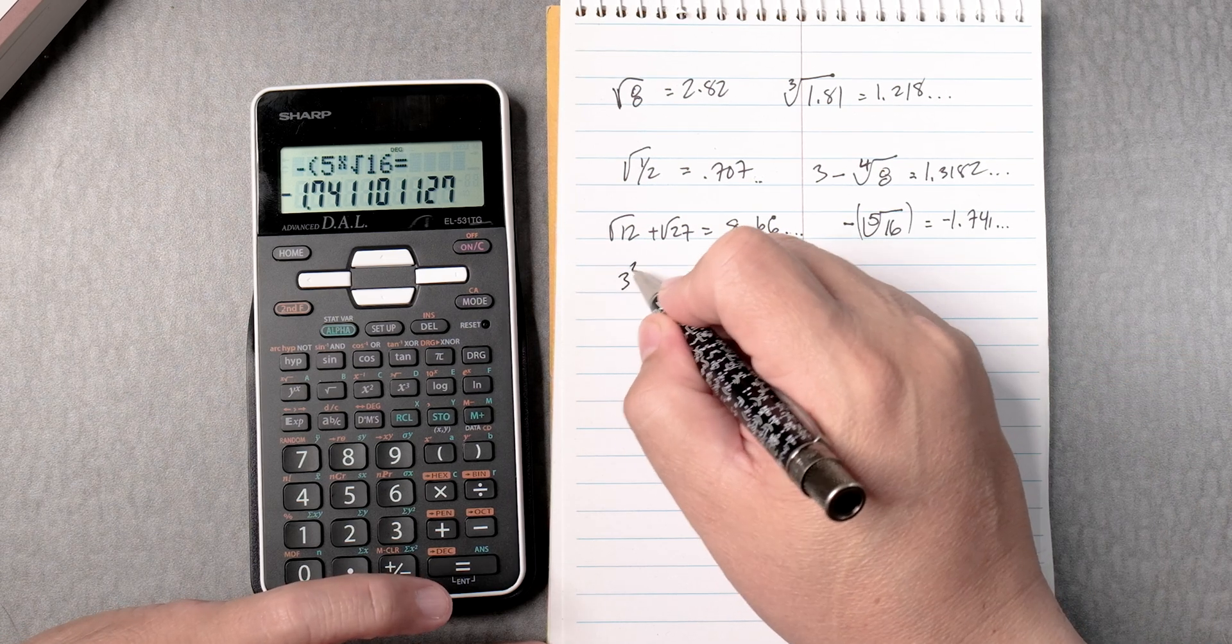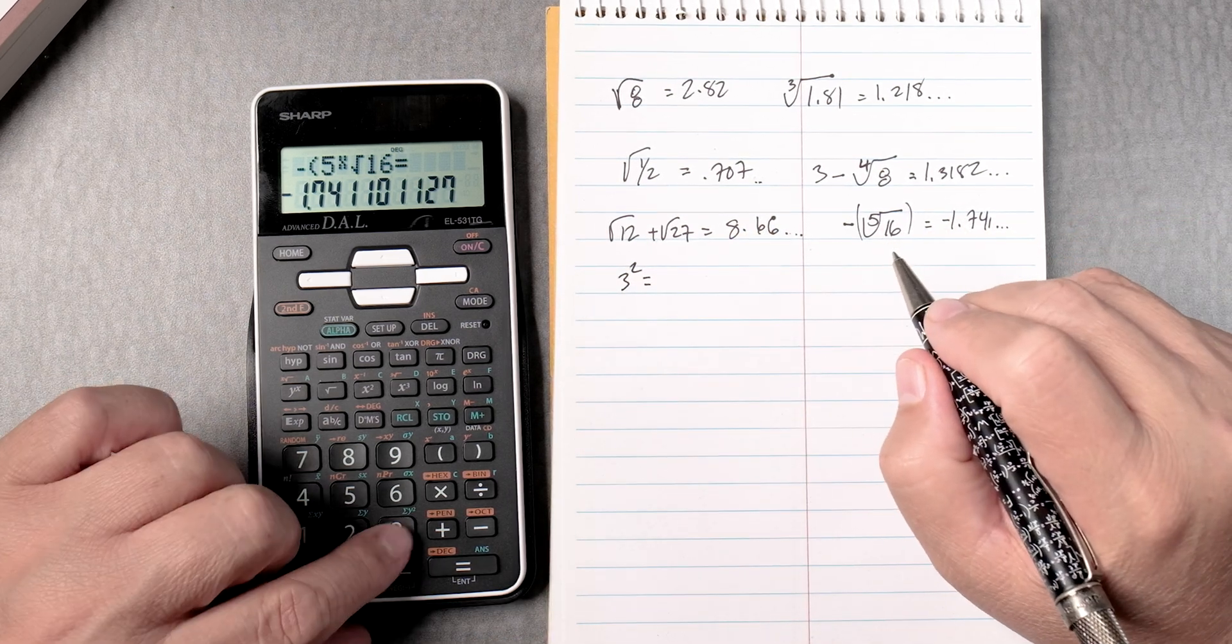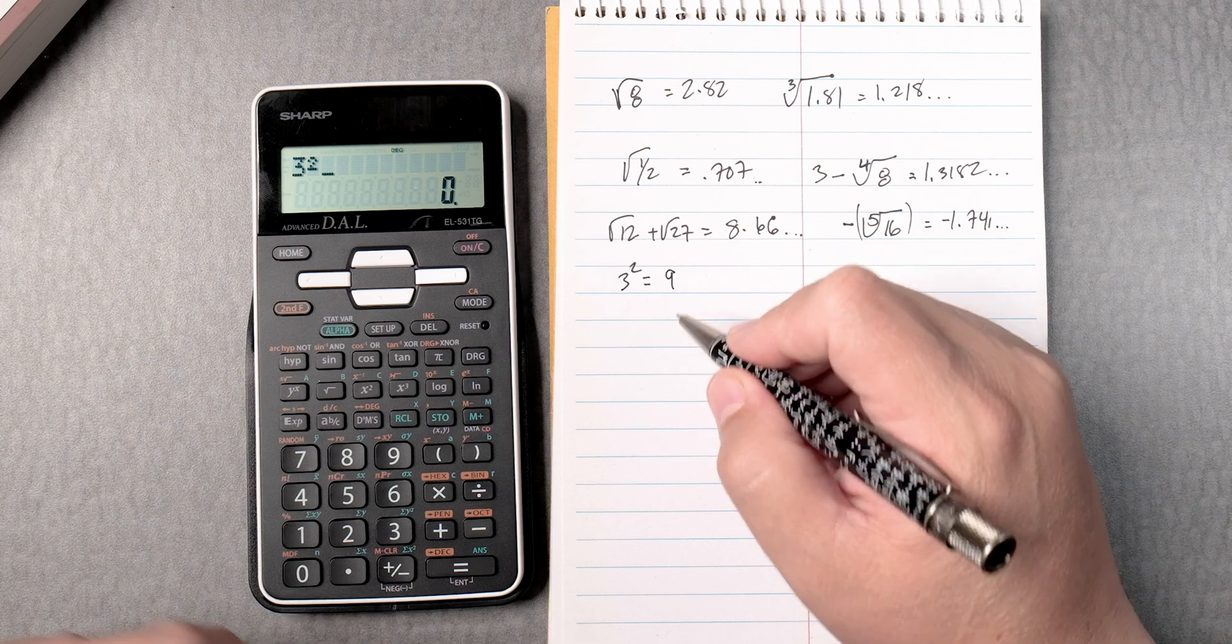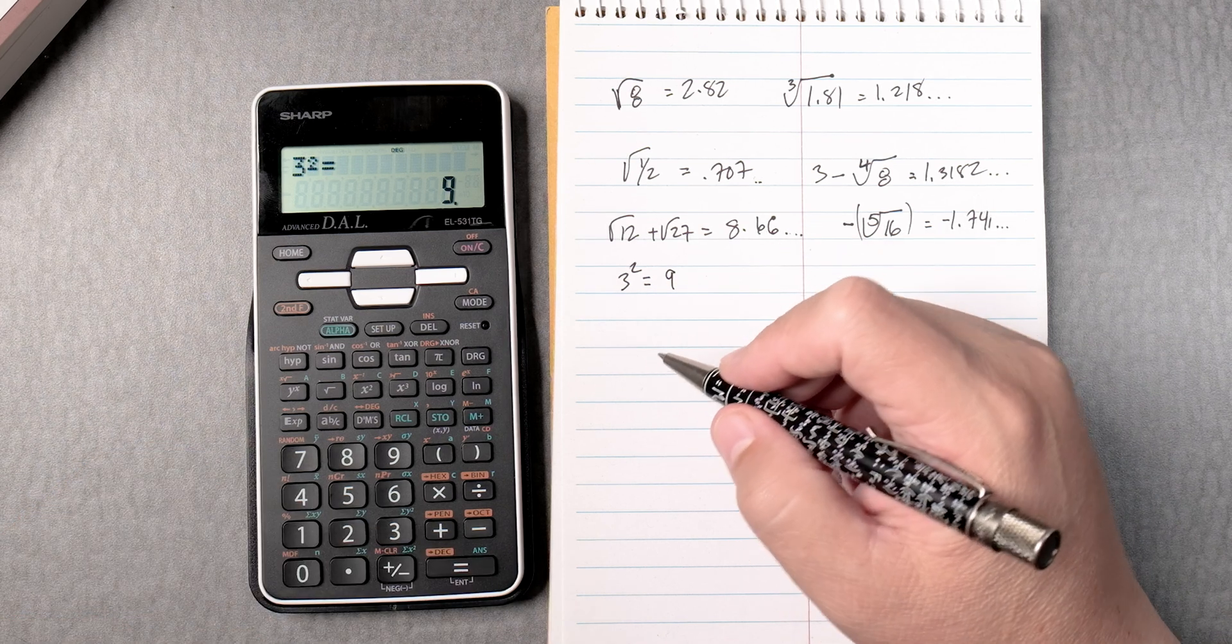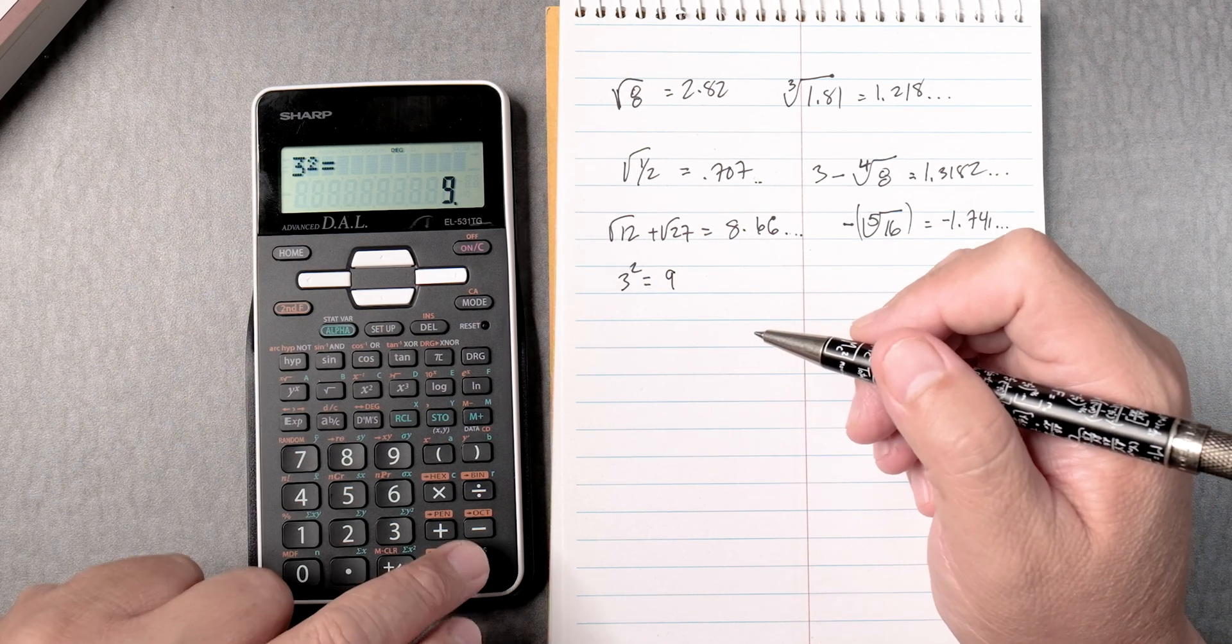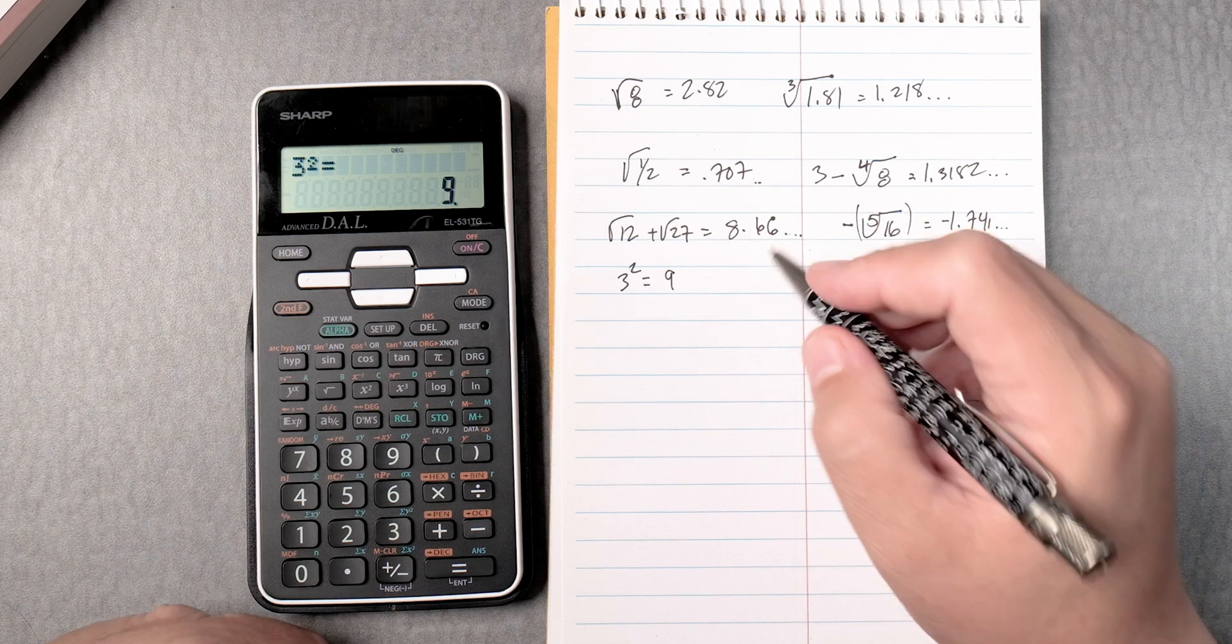3 squared. 3 squared gives you 9. You got to press the equal sign to get the answer. If I press the equal sign again, no, it doesn't do anything else. Good.